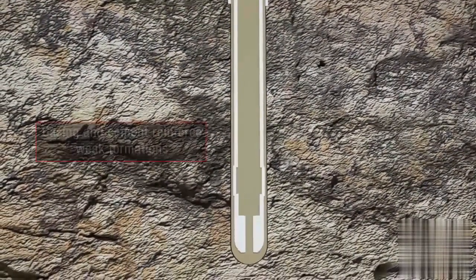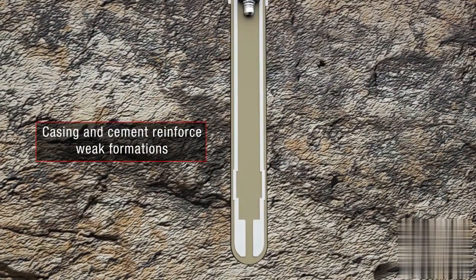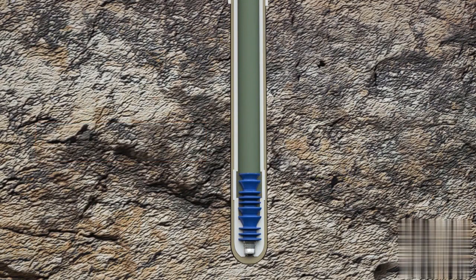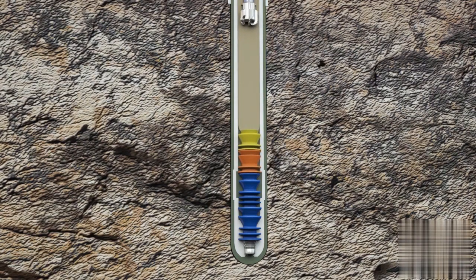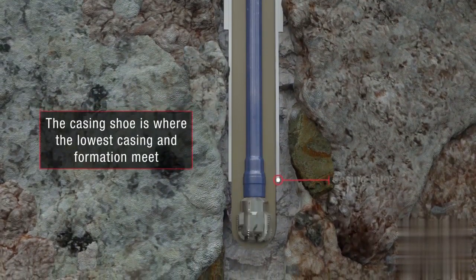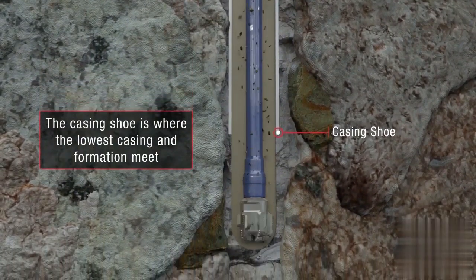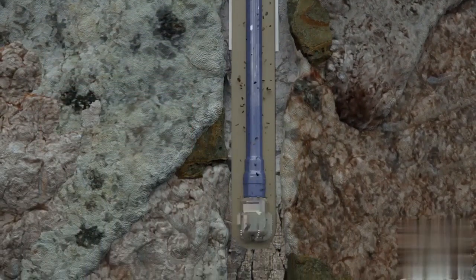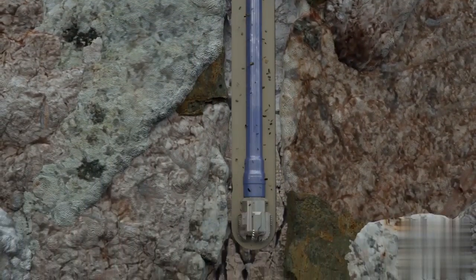When drilling a well deeper, the well is reinforced with casing and cement. Casing is set in the middle of the hole and cement is then pushed down the casing and forced up the outside of the casing. Drilling is then continued deeper into the formation. The exposed wellbore area immediately below the casing is called the shoe, and it is typically the weakest part of the exposed wellbore before more casing is used to protect the formation.